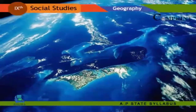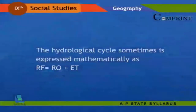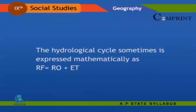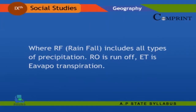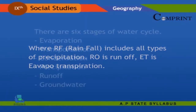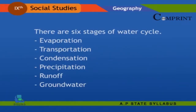The hydrological cycle is sometimes expressed mathematically as RF = RO + ET, where RF includes all types of precipitation, RO is runoff, and ET is evapotranspiration. There are six stages of the water cycle: evaporation, transportation, condensation, precipitation, runoff, and groundwater.